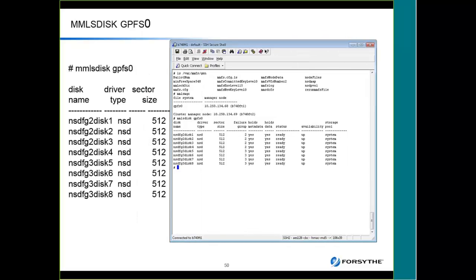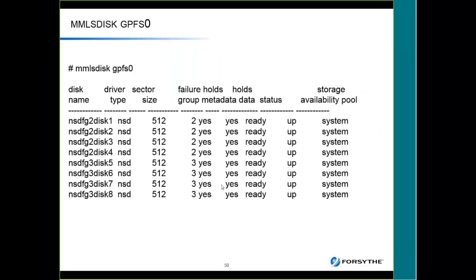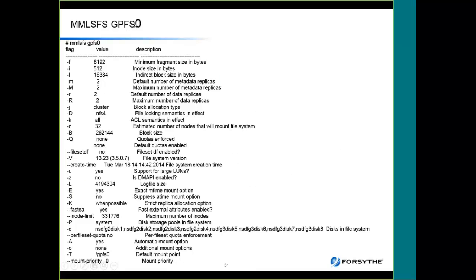You can see different storage pools — ours was a fairly simple environment so I didn't get complicated with storage pools. You can also do an MMLSFS on a file system to see all the different values you can set, showing current values and descriptions. For example: whether quotas are enforced, block size set to 256K, the default mount point, and a list of all NSDs it's connected to.